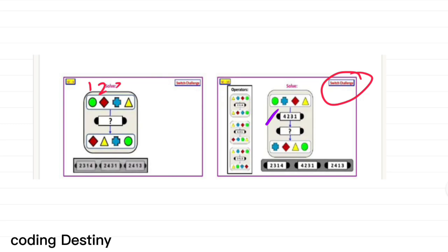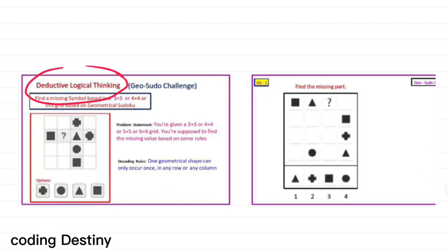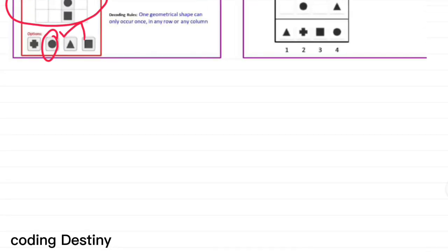In the switch challenge, for example, position one maps to three, three maps to four, and four maps to two — so the correct option is the second one. Note that sample questions are easy but as you advance level by level, the difficulty increases. For the detective logical thinking challenge, they give you a pattern and ask what shape should fill the question mark. For example, if plus, triangle, and circle are shown and the remaining part is a circle, the correct answer is circle.